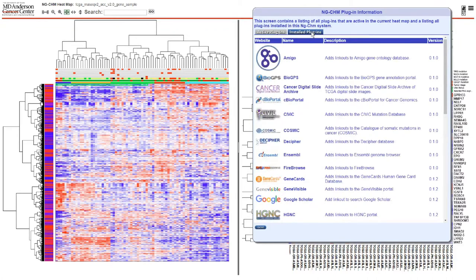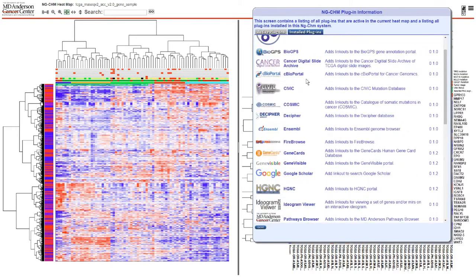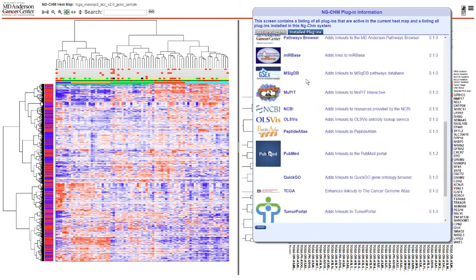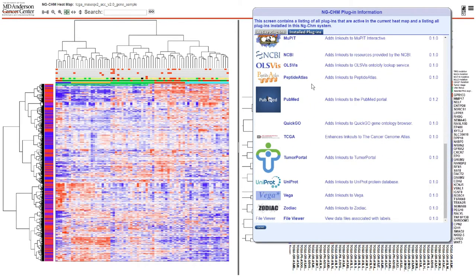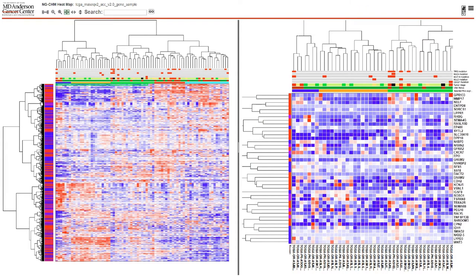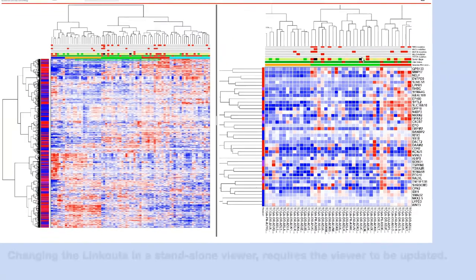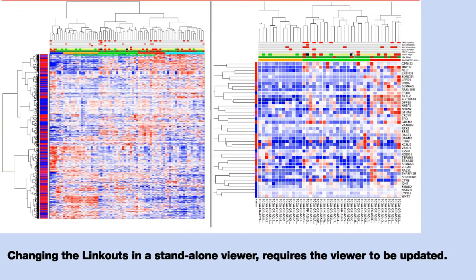Link out plugins can easily be added to or removed from a server-based viewer, and they can also be modified. Such changes may be reflected in the link outs incorporated into the label menus. Changing the link out plugins in a standalone viewer requires the viewer to be updated.